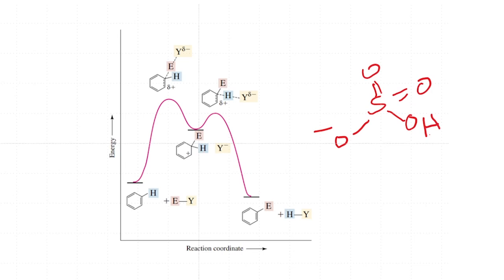The first step is a slow step, so the barrier to that first step might be quite high. Being in equilibrium, the reverse step is also accessible at room temperature. Together, the sulfonation of benzene is a reaction very similar to any other electrophilic aromatic substitution.